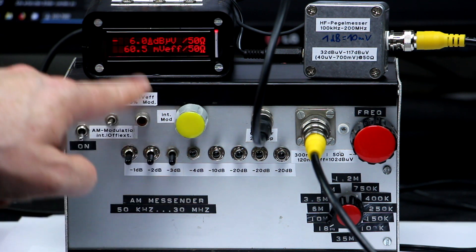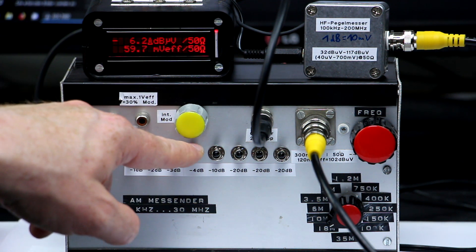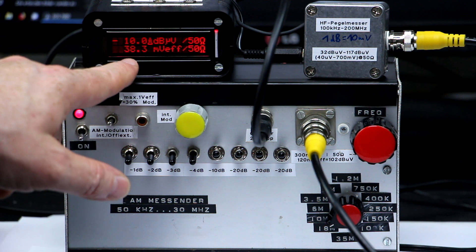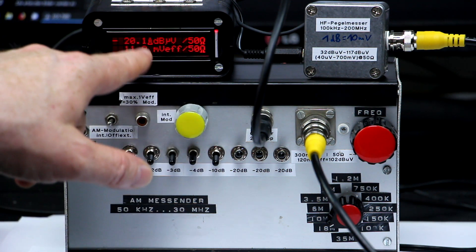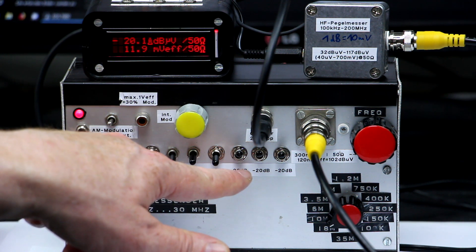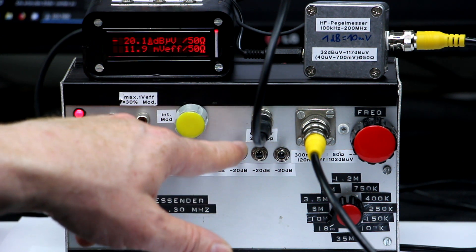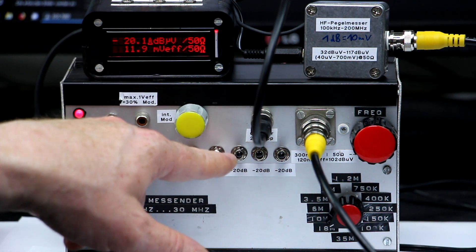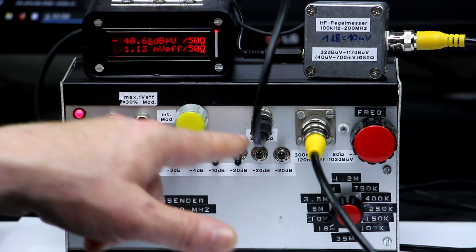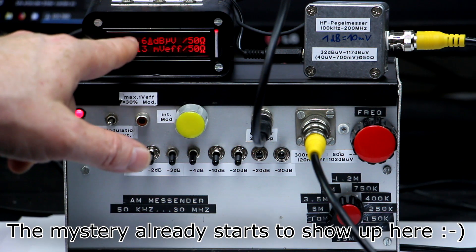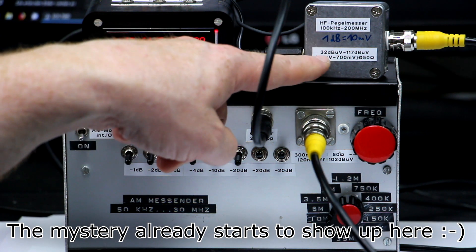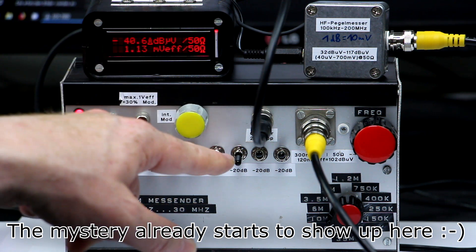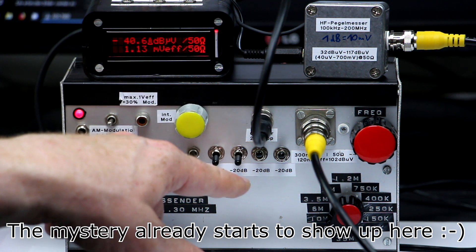Next one minus 4 dB plus the minus 6 should give minus 10. Yeah, we're exactly there. The next one minus 10 should give all in all minus 20. Exactly plus minus 0.1 dB. Then come the three minus 20 dB attenuators. The first one minus 20 dB added should give minus 40. A little bit less because we know they are not exactly minus 20 dB. So okay, minus 40.6 dB is within specs.